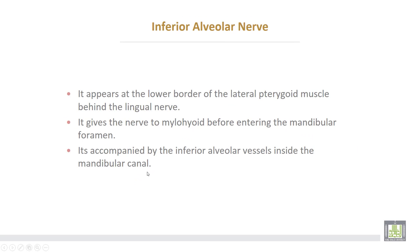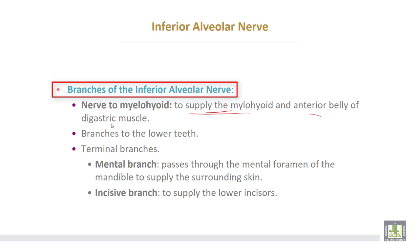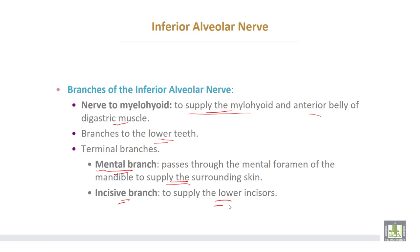The inferior alveolar nerve appears at the lower border of the lateral pterygoid muscle, behind the lingual nerve. It gives a nerve to the mylohyoid muscle before entering the mandibular canal, accompanied by the inferior alveolar vessels. Branches of the inferior alveolar nerve include the nerve to the mylohyoid, supplying the mylohyoid muscle and the anterior belly of the digastric muscle, and branches to the lower teeth. Its two terminal branches are: the mental branch, which passes through the mental foramen of the mandible to supply the surrounding skin, and the incisive branch, which supplies the lower incisors.